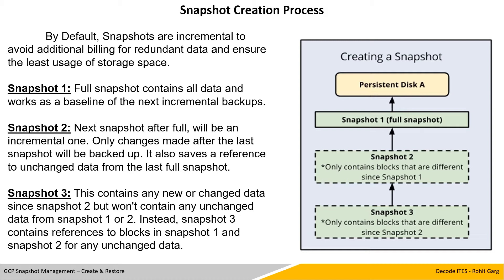This is the chain that GCP Compute Engine and snapshot functionality maintains to ensure data recovery and optimal disk usage to reduce cost. We also have an image from Google documentation which illustrates the same. We have a persistent disk A: the first snapshot is a full one, snapshot 2 contains only changed data with the rest mapped from snapshot 1, and snapshot 3 copies only data changed after snapshot 2 and creates pointers for unchanged data from snapshots 2 and 3.